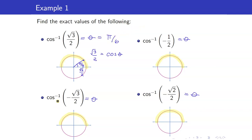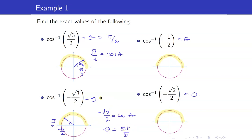For cosine inverse of negative square root of 3 over 2: we are looking for an angle whose cosine equals negative square root of 3 over 2. Cosine is the x-coordinate, so we are in quadrant 2. The reference angle options are pi over 6 and pi over 3; this must be pi over 6. Therefore, the angle is pi minus pi over 6, which equals 5 pi over 6.